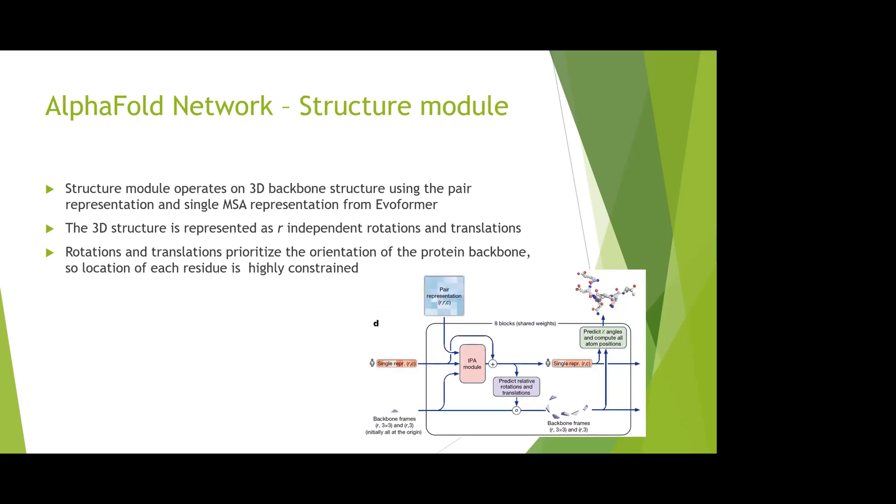Here we talk about the details of the structure module, the second step of the network. This structure module operates on the 3D backbone. The 3D structure is represented as independent rotations and translations on each residue. These rotations and translations can prioritize the orientation of the protein backbone, so the location of each residue is highly constrained.